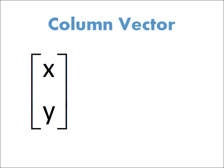A translation is defined by a column vector written like this, with a value for x and a value for y.